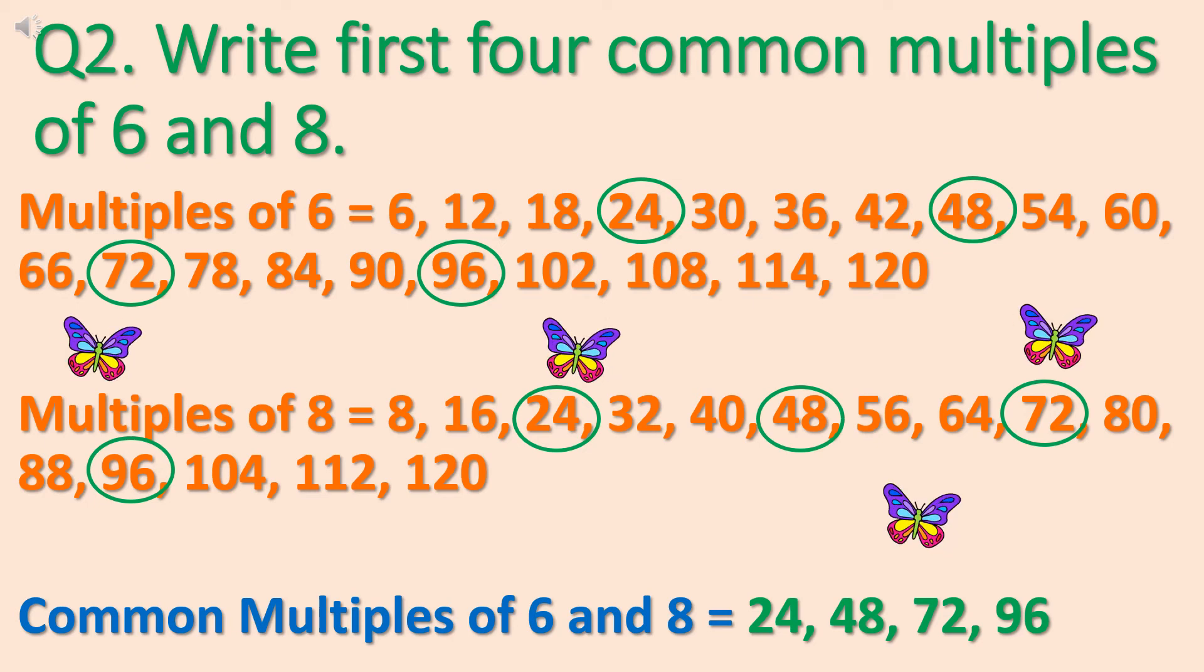So common multiples of 6 and 8 are 24, 48, 72, 96. There can be many more common multiples but as we have been asked to write first 4 common multiples only, so we are writing first 4 common multiples.